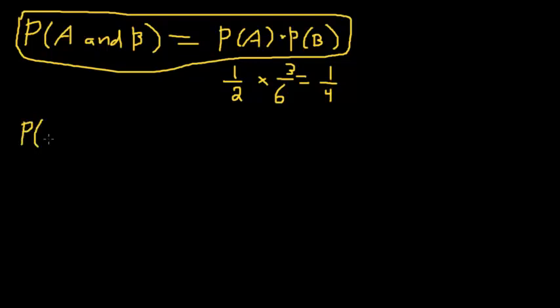One that people that try to memorize them tend to have trouble with is the probability of A or B. So first I'll just do the example. So the probability of, let's say, rolling heads or, let's say, flipping heads or rolling an even number.